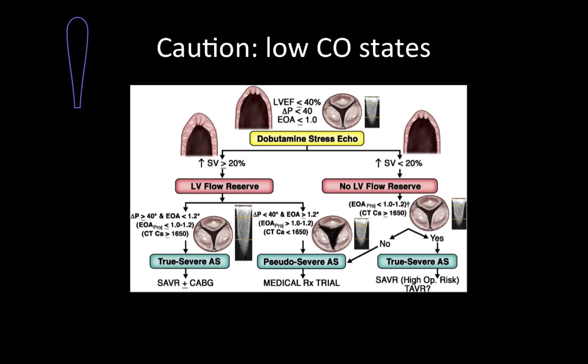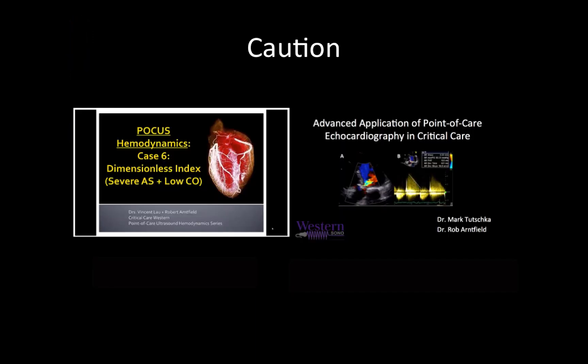A brief word of caution about low cardiac output states: in cases of severely reduced myocardial contractility, you can underestimate the severity of aortic valve disease, as reduced contractility will not generate a pressure gradient that accurately reflects the severity of the stenosis. In the outpatient setting, these patients would be sent for a dobutamine stress echo; however, on the wards or in critically ill patients in the ICU, this is not practical. To evaluate these patients, we can use the dimensionless index. For more information on this, I direct you to Dr. Vincent Lau's excellent screencast on the dimensionless index found on the Western Sauno site, with a link in the video description below.